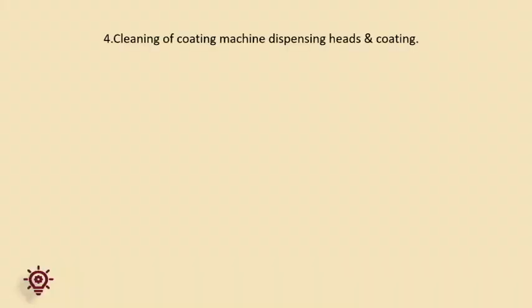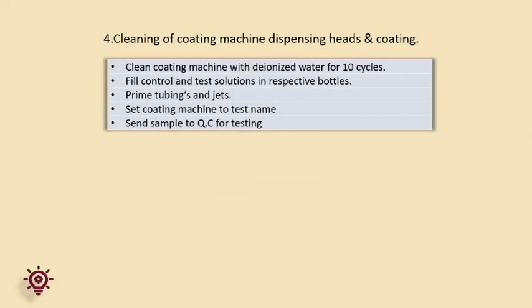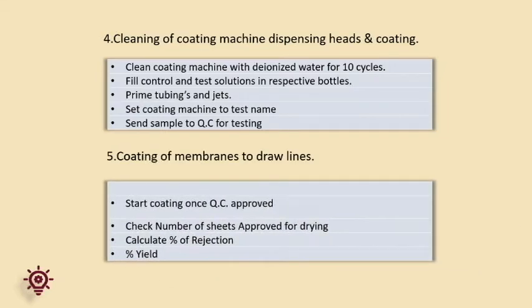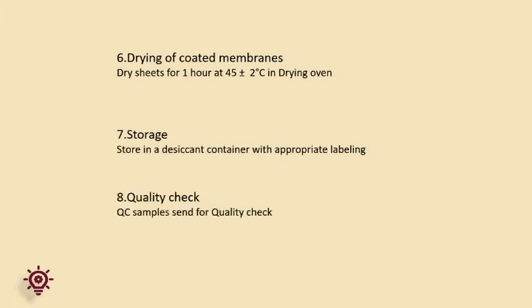Cleaning of the coating machine is required before the coating process. The coating machine needs to be cleaned with deionized water for a minimum of 10 cycles. Then fill the control and test solution in their respective bottles. Prime the tubing and label the jet with the test name. Once coating is started, send the initial sample for QC testing. Once QC is approved, start the coating process, check the number of sheets coated, and calculate the percentage of rejection and yield. The coated membrane is dried in the oven for one hour at 45 degrees centigrade, and the dried membrane is stored in a desiccant container with appropriate labeling. A QC sample is sent for quality check before storage.